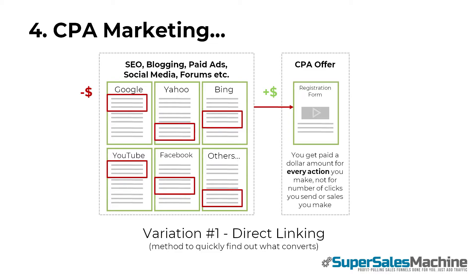The cost is in the time and effort you put into generating traffic, and the money you spend on paid ads. This method is called direct linking, and is a great way to find out how well a CPA offer converts.